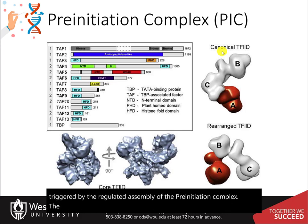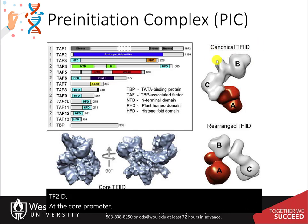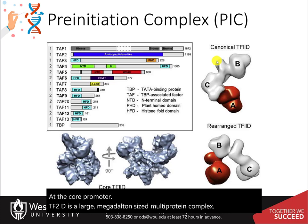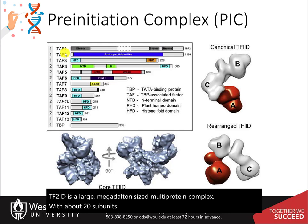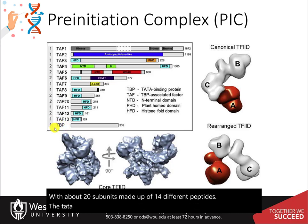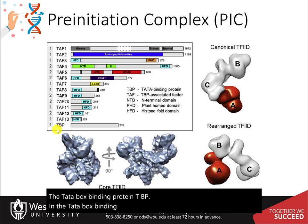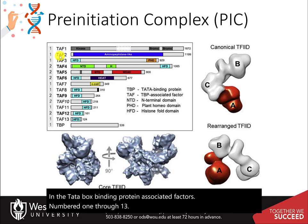The pre-initiation complex formation commences with the binding of TF2D at the core promoter. TF2D is a large megadalton-sized multiprotein complex with about 20 subunits made up of 14 different peptides. The TataBox binding protein TBP, and the TataBox binding protein associated factors numbered 1 through 13, make up the core structure of TF2D.